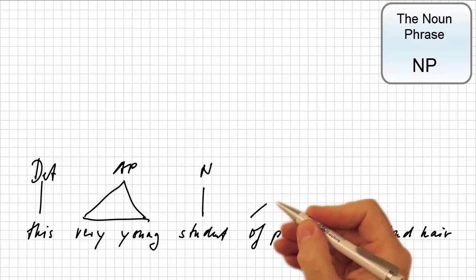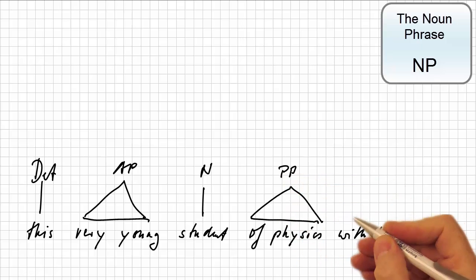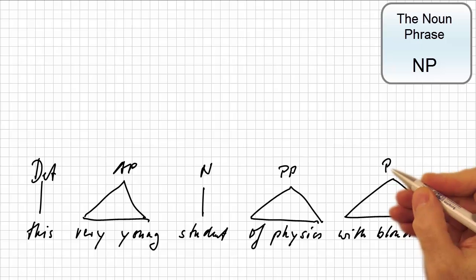student, the head noun, and then we have two prepositional phrases. Of physics and with blonde hair. Again, both shown as triangles.